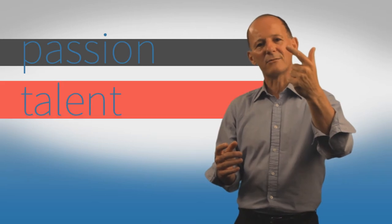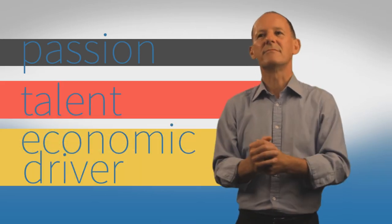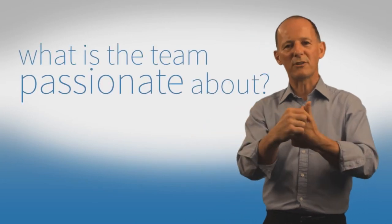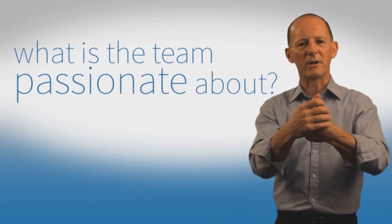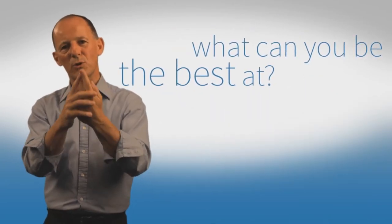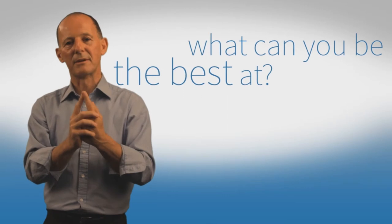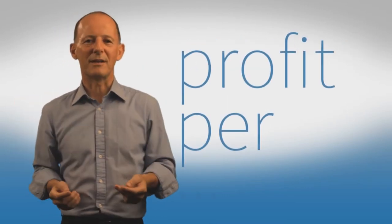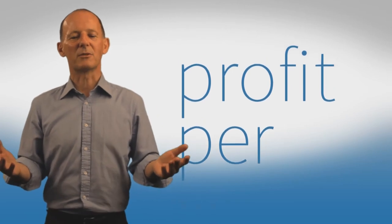He went on to break this hedgehog concept up into three things: passion, talent, and an economic driver. And he said absolute clarity was required around all three. So as a company, you and your team had to know what you're absolutely passionate about, what you love doing. Where could you be the best at? Not like to be or intend to be the best. Where can you actually be the best? And what drives your economic engine, typically articulated as an economic denominator, profit or something?